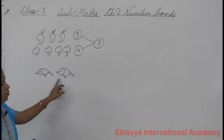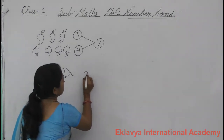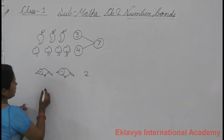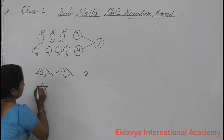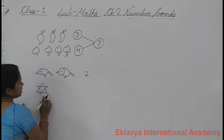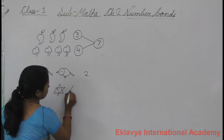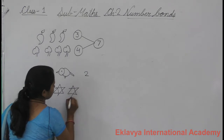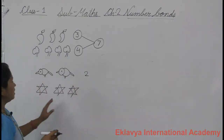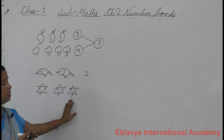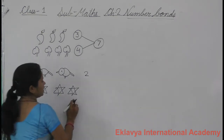What is this? Birds. How many birds are there? Two. What is this? Stars. How many stars? Count fast. One, two, three.